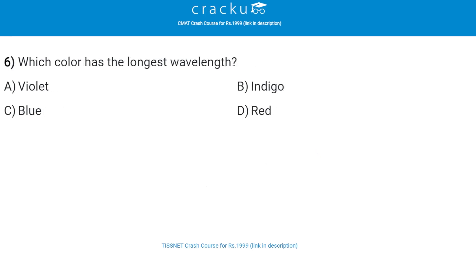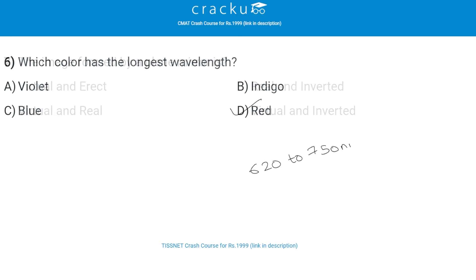Next: which color has the longest wavelength? The correct answer is red color, that is option D. Red color has longer waves with a wavelength of around 620 to 750 nanometers.